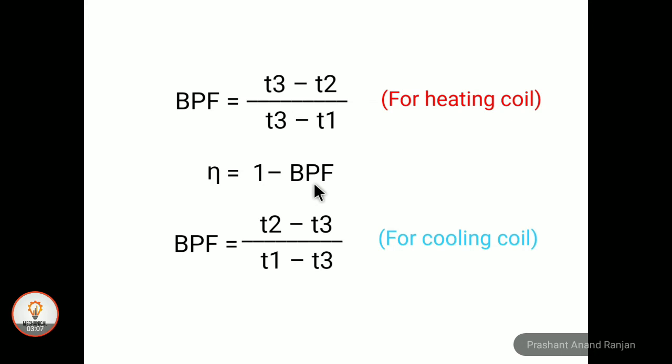Here the efficiency of the heating coil can be calculated as 1 minus BPF. As BPF represents the loss, 1 minus loss represents the efficiency. Similarly, for the cooling coil we can write it as T2 minus T3 divided by T1 minus T3.